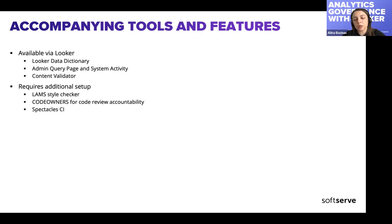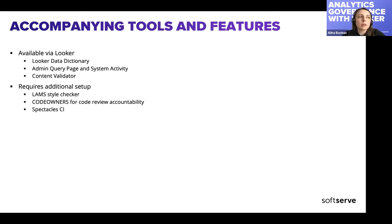The Spectacles continuous integration tool helps validate your LookML code. Looker IDE can validate LookML, but it won't validate some cases — for example, SQL code. Spectacles helps make sure the code will run in production. Organizational tools available directly from Looker include the Looker Data Dictionary — it's highly recommended to provide descriptions for all fields and explores in the hub model. You can also use the admin query page or System Activity and the Content Validator to check if any dashboards broke after a model change.